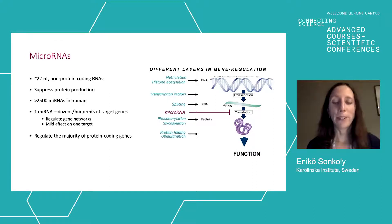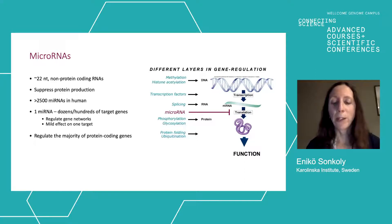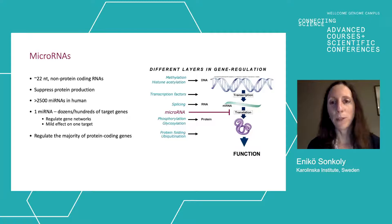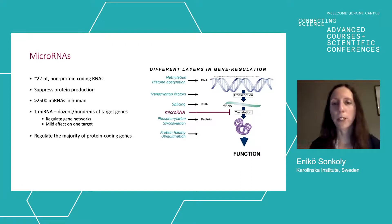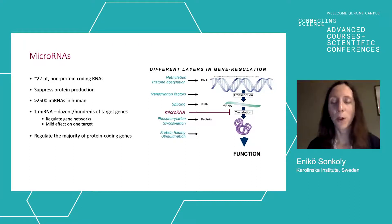So why do we need microRNAs at all, and why do we have so many? Back to the flow of information from DNA to RNA to protein to function. These processes have to be very tightly regulated, especially in complex organisms like humans. The extent and timing of gene expression is very important when building and making complex organisms function, and this tight regulation is only possible if there are several levels of regulation.